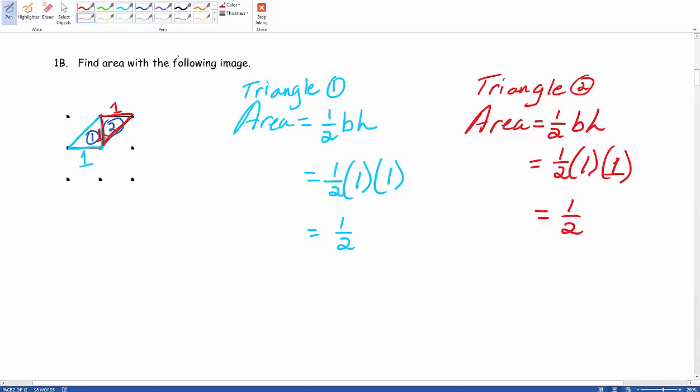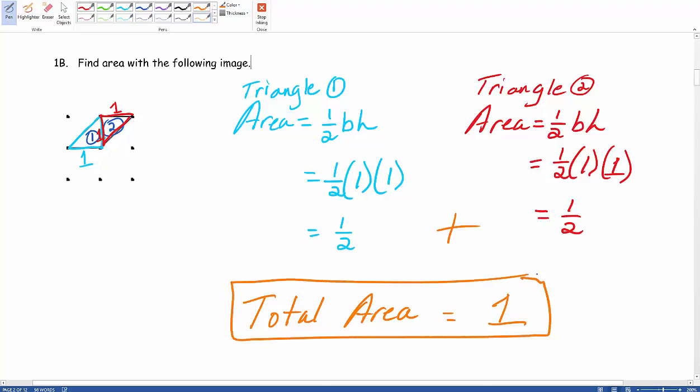Then the total combined area for this entire parallelogram is where we take both triangles, both the blue and the red, and combine them together. So we add these two together and get a total area of 1. That would be our final solution. That is Target 1B. Thank you.